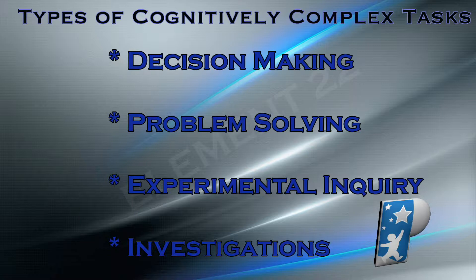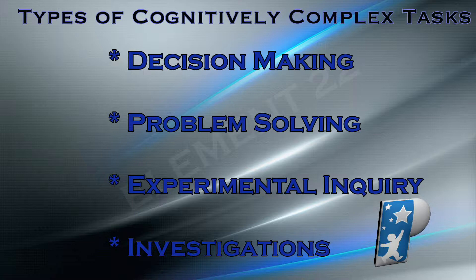There are a variety of methods to create cognitively complex tasks. Four ways are highlighted here: Decision-making — use deep knowledge to develop criteria, brainstorm solutions, evaluate and make decisions. Problem-solving — use deep knowledge in a different context to solve a problem. Experimental inquiry — use deep knowledge to form a hypothesis, test it, and draw conclusions. And investigations — use deep knowledge to attempt to solve a mystery or unanswered question.